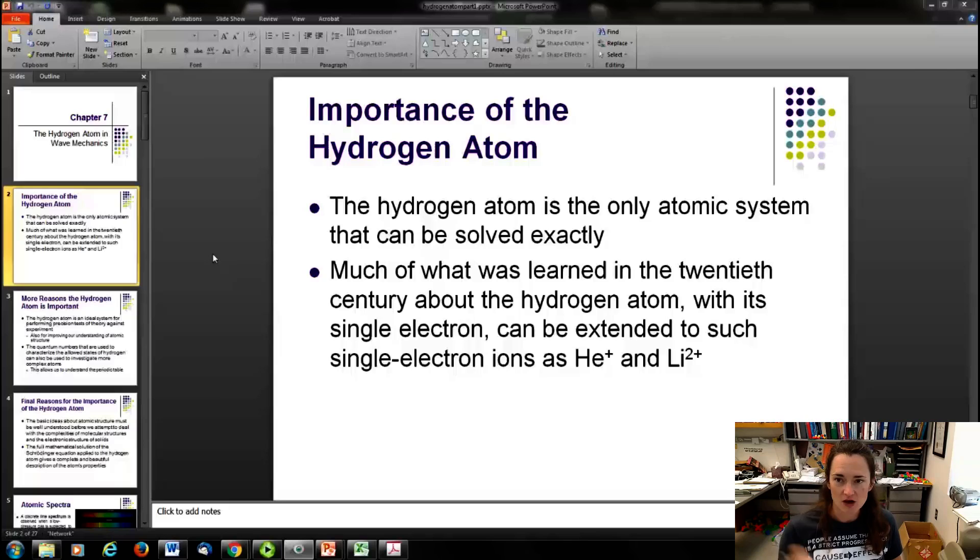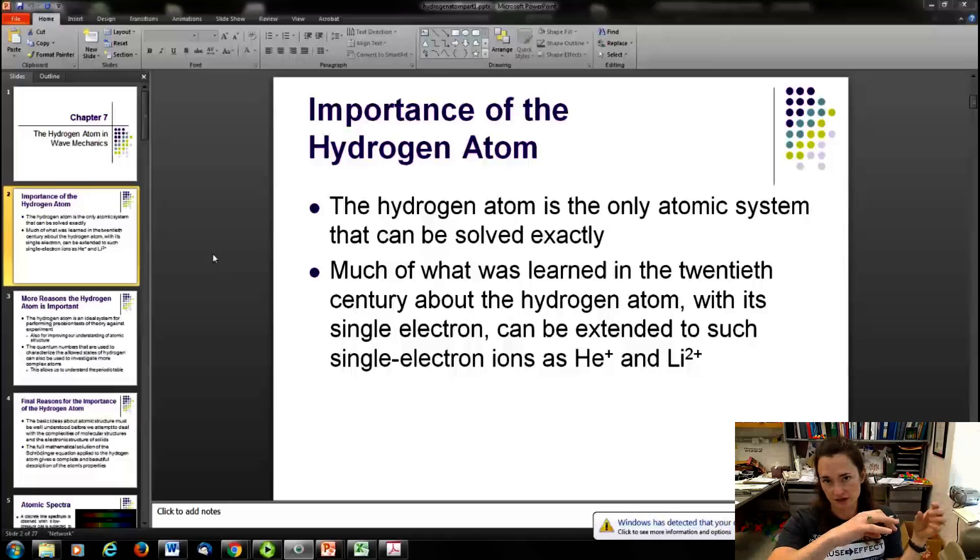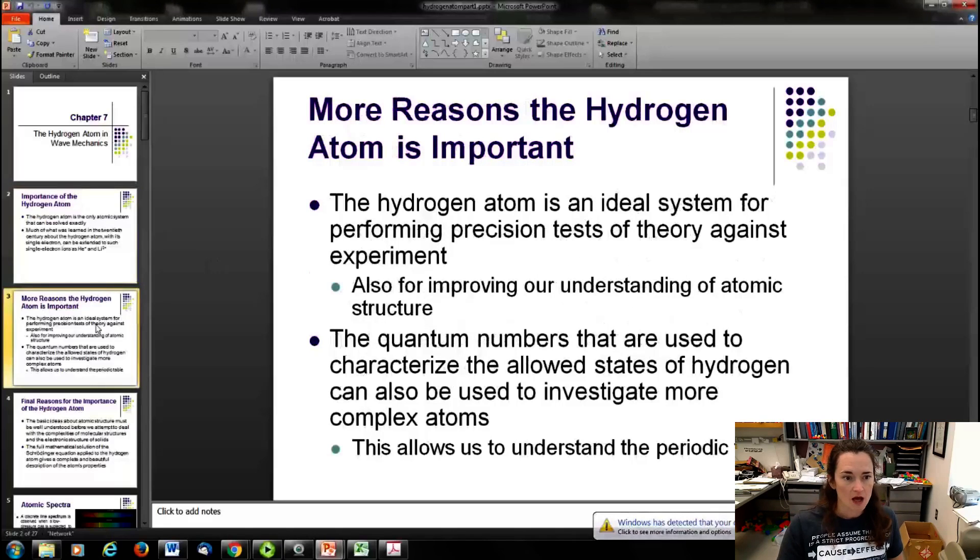The hydrogen atom is an important system because it's actually the only atomic system that you can exactly solve. All other atoms have multiple electrons, and then it becomes more than just having to consider the nucleus and the electron. You actually have to consider the potential energies of all the other electrons, and that gets messy. However, you can apply it to other atoms as long as they're ionized, as long as they only have one electron. You can apply it to helium ions or doubly ionized lithium, and the system works pretty well for that.